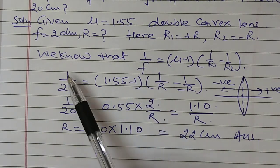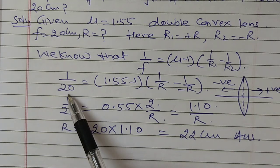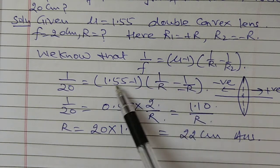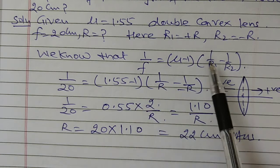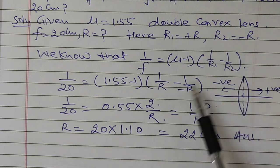On putting the values, focal length is given as 20 cm for the convex lens. Mu is equal to 1.55 minus 1, R1 is equal to plus R and R2 is equal to minus R.